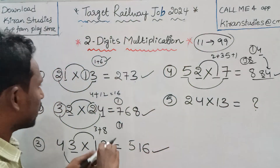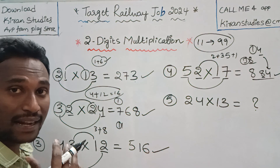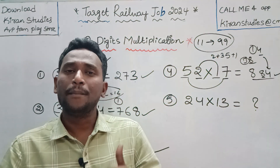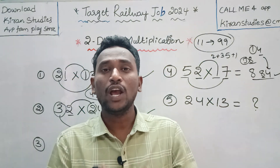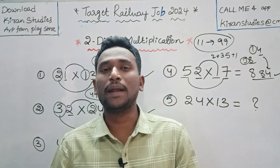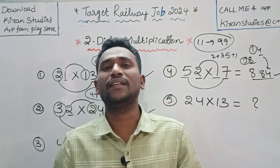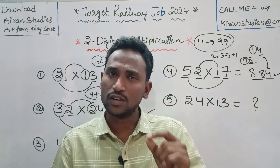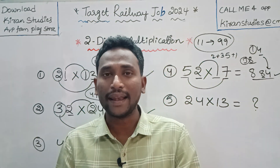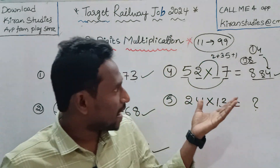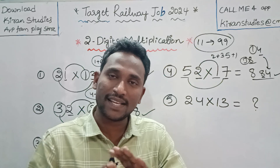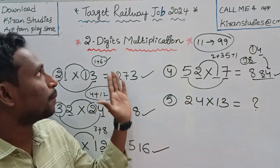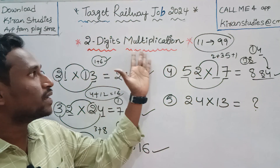Now you can calculate the rough calculations. If you calculate the speed, you can do the 2-digit multiplication very, very, very simply — within 2 to 5 seconds. You can do it up to 10 tables easily in two digits.